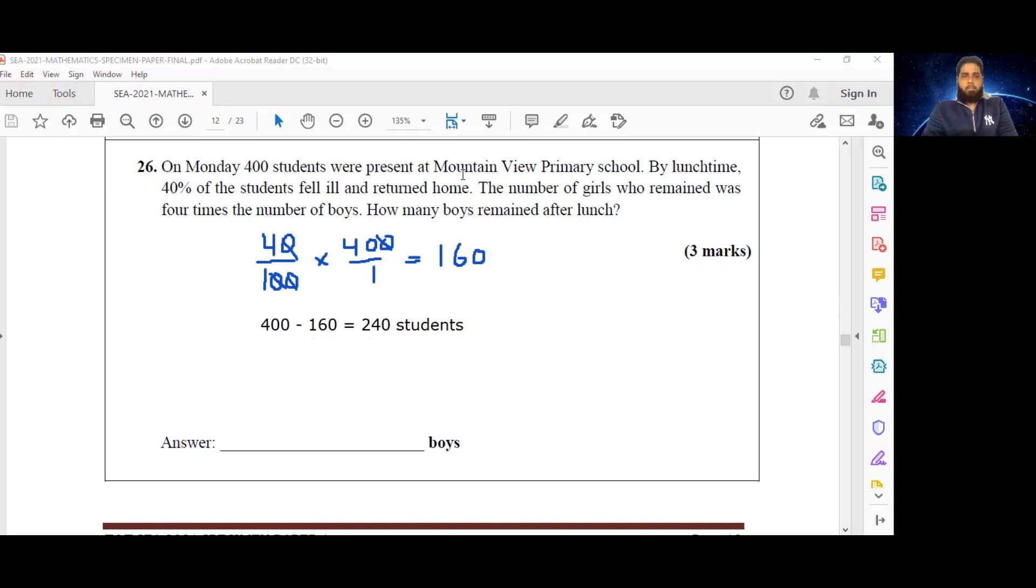The number of girls who remained was four times the number of boys. So what this is telling me is that if I had a block diagram to basically represent this, I'm going to have four parts being girls.